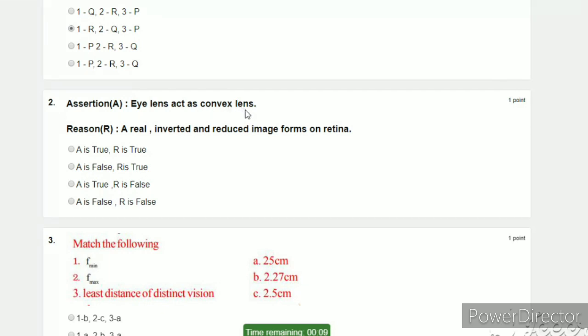Now to choose. Eye lens is convex lens. This convex lens forms real image. It is inverted, it's reduced, minimized. So here the assertion and reason are both correct. Option one: A is true and R is also true.